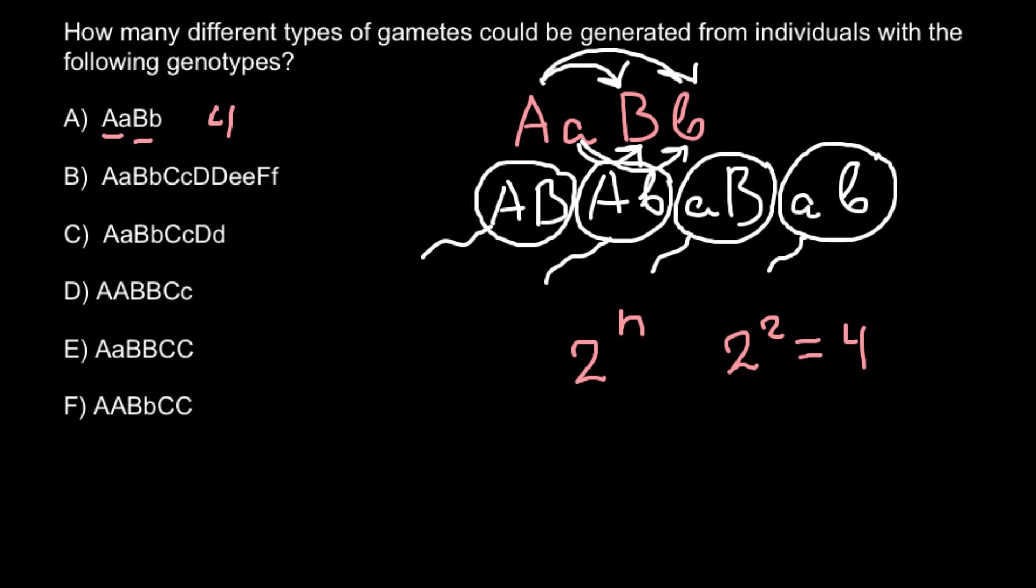Here with question B, we have 1, 2, 3, and 4. So we ignore all the genes that is in homozygous state, whether homozygous dominant or homozygous recessive. We ignore them. So we have 1, 2, 3, 4. So that means we have 2 raised 4.